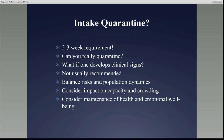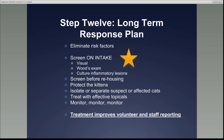Step twelve is to develop a long-term response plan — so important. You just went through this whole nightmare; now develop a plan so animals are identified at intake. Screen on intake: visual exam, Wood's lamp, culture, inflammatory lesions — those are my three intake highlights. Screen before rehousing. Protect kittens — they're the most likely to get infected. Isolate or separate suspect or affected cats. Treat with effective topicals. Monitor every time an animal moves — I think of it as a critical move. Before they go to foster, look them over for lesions. Before they go into a group room, look them over. Before they go to a satellite adoption center or pet store, look them over.